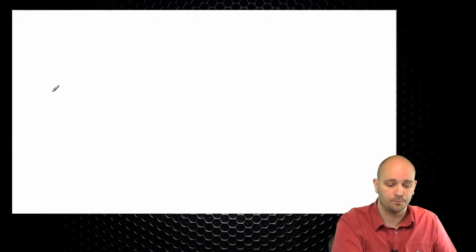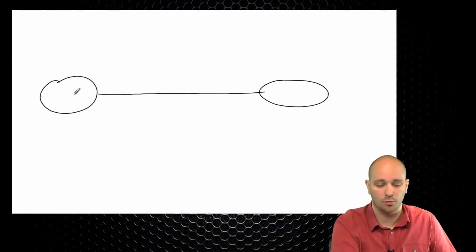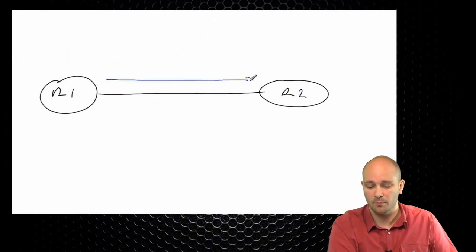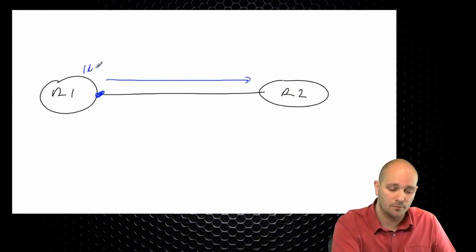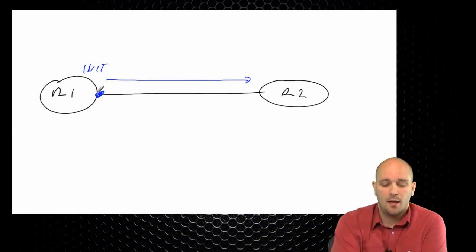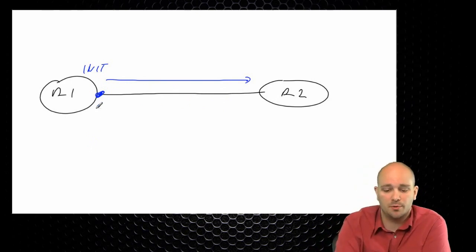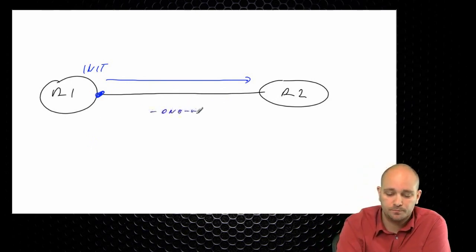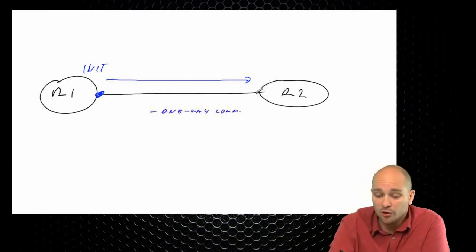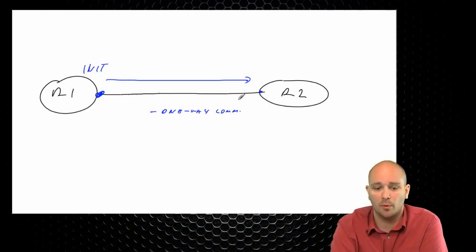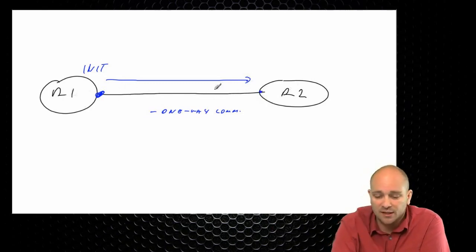Last but not least, there is the full state, where the database is in sync. This is a possible stable state. There are only two possible stable states: full and two-way. All others are transient states, and if you see a router in any of those states for an extended period of time, something is wrong.